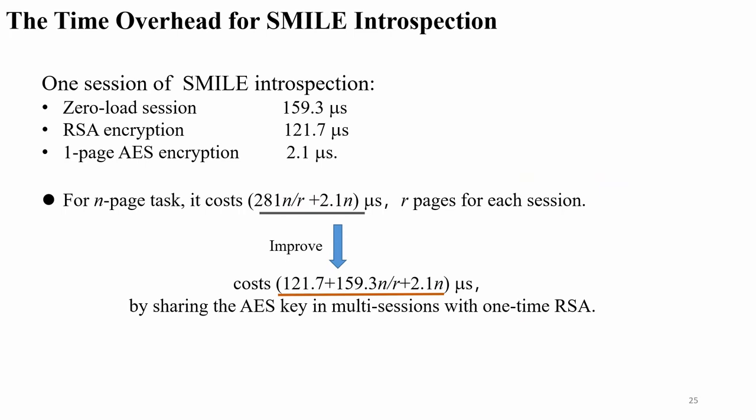After the experiment, we measured the overhead for each session of the SMILE introspection. In general, it takes 160 microseconds for the zero-load interrogation session and another 120 microseconds for the EPC encryption. It also takes 2.1 microseconds for a one-page EPC encryption. For an n-page task, the overhead scales accordingly. To improve performance, we can reduce the encryption overhead — for example, by sharing the AES key across material sessions with a one-time setup. Once the AES key is shared in a secure state, there is a noticeable performance improvement.